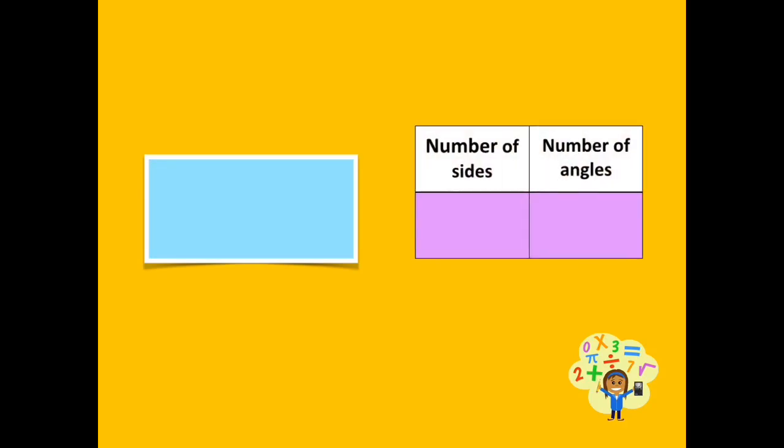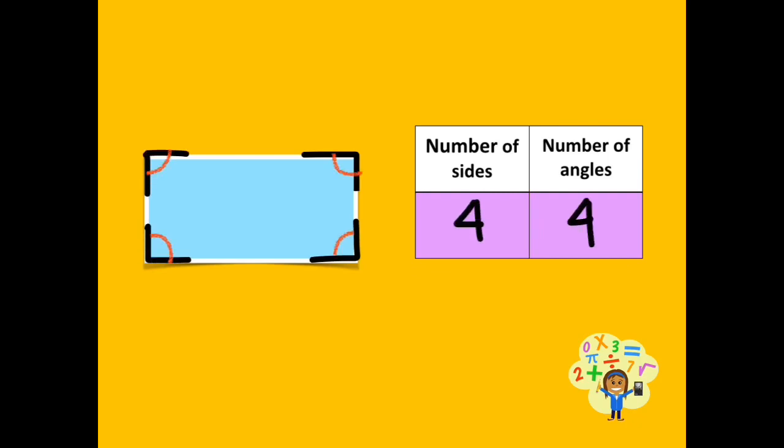Let's look at the given shape. How many sides does a rectangle have? A rectangle is made of four sides. How many angles are there in a rectangle? There are four angles in a rectangle.